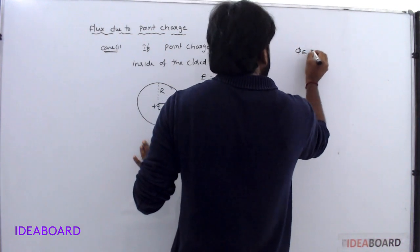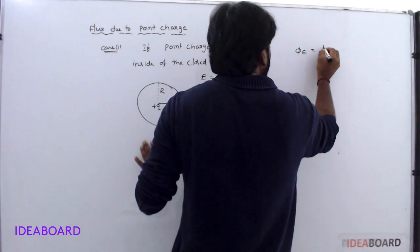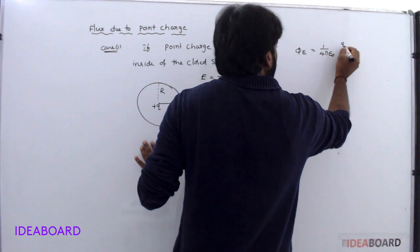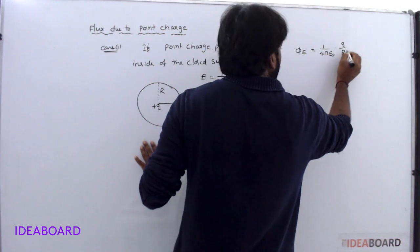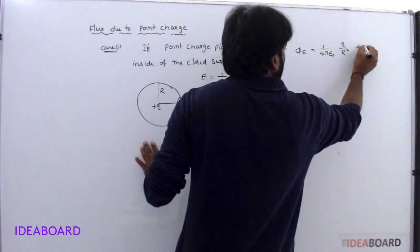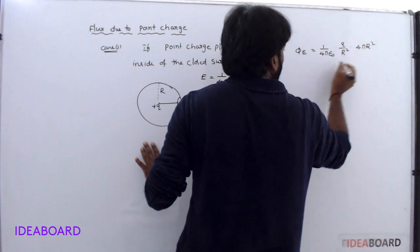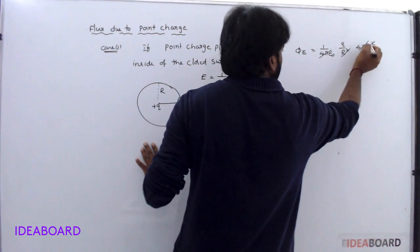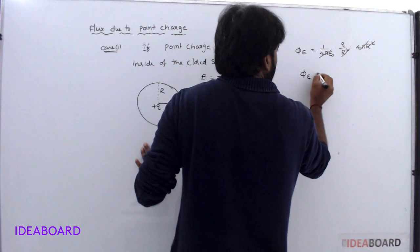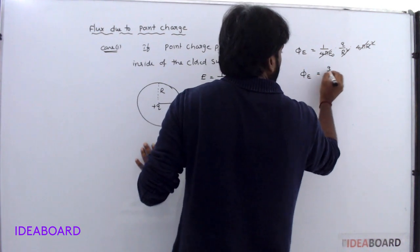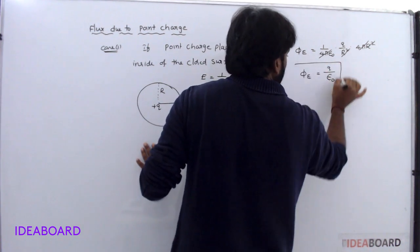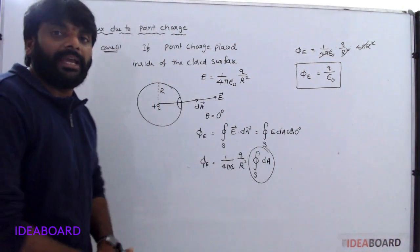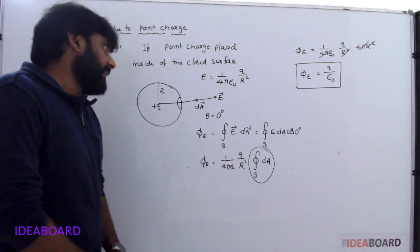Electric flux is equal to 1 by 4 pi epsilon naught, times Q by R square, times the surface area 4 pi R square. The R square terms cancel, giving electric flux equal to Q by epsilon naught.